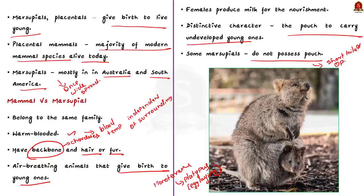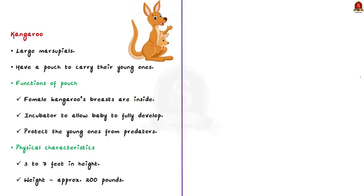Coming back to the article, the forest officials rescued animals that were being smuggled through the corridor that starts from the northeast of India to North Bengal. The rescued kangaroos had been handed over to the Bengal Safari Zoo in Siliguri. In this context, let us learn about kangaroos, their habitat and their conservation status.